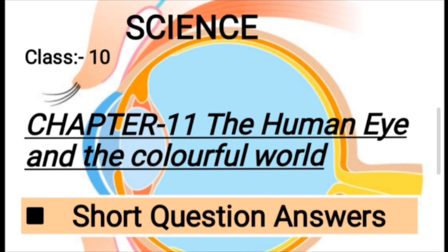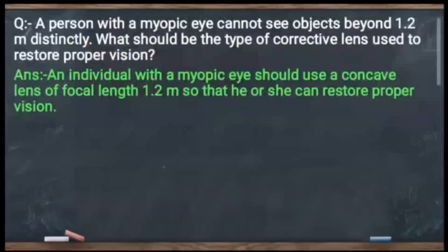Let's get started. The next question is: a person with a myopic eye cannot see objects beyond 1.2 meters.